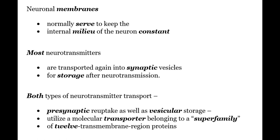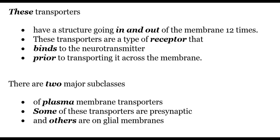Both these types of neurotransmitter transport — that is, the presynaptic reuptake as well as the vesicular storage — utilize a molecular transporter belonging to a superfamily of 12 membrane region proteins. These transporters have a structure going in and out of the membrane 12 times, hence the name. These transporters are a type of receptor that binds to the neurotransmitter prior to transporting it across the membrane.